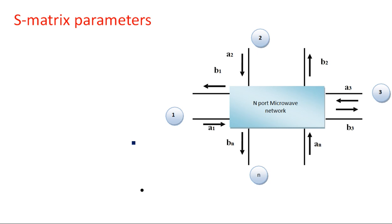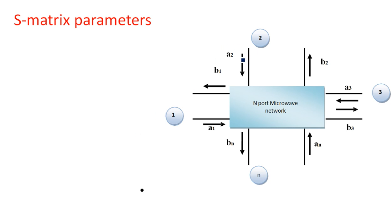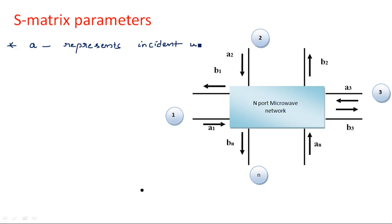Looking at the diagram, A1, A2, A3, A4, and so on up to N — all these represent the incident wave. Here 'A' represents the incident wave, meaning it goes inside the waveguide. 'B' represents the reflected or output wave.